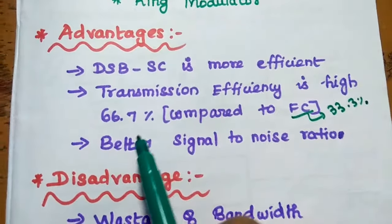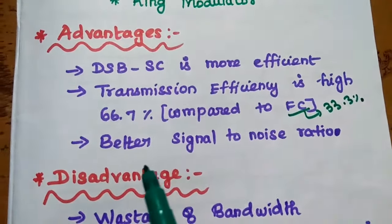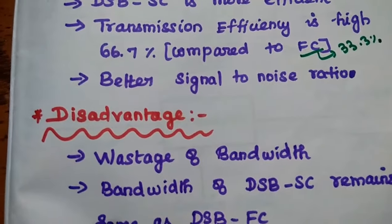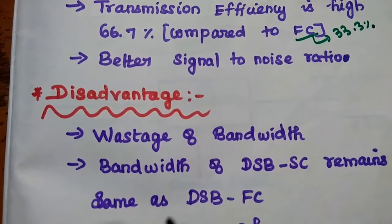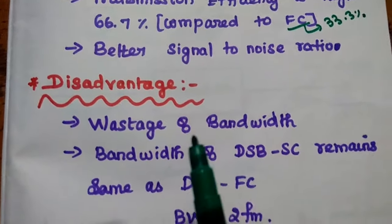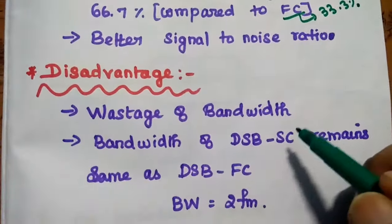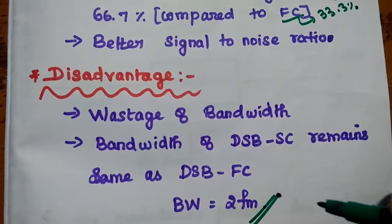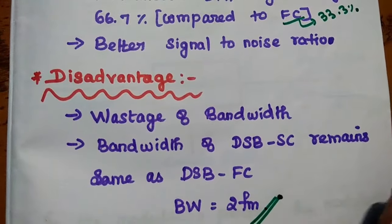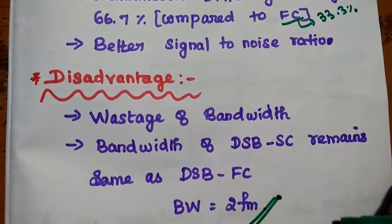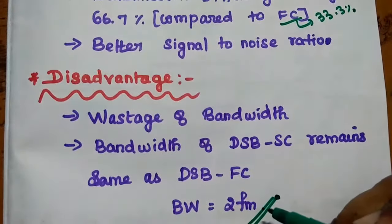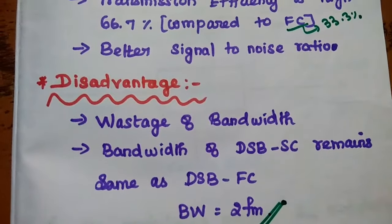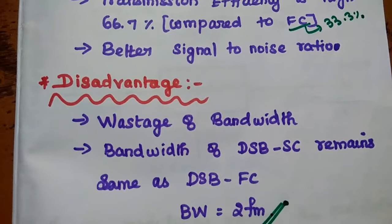The advantages of DSB-SC amplitude modulation include better signal-to-noise ratio and higher transmission efficiency of 66.7% compared to full carrier AM. However, the major disadvantage is wastage of bandwidth, since DSB-SC still occupies a bandwidth of 2FM — two times the modulating frequency — which is not reduced compared to full carrier AM.